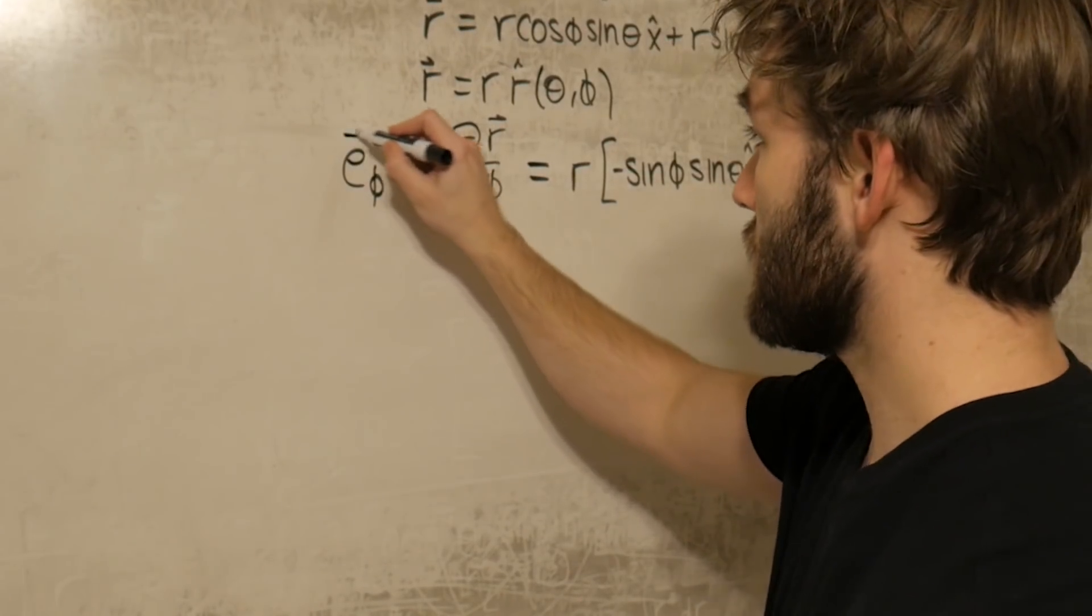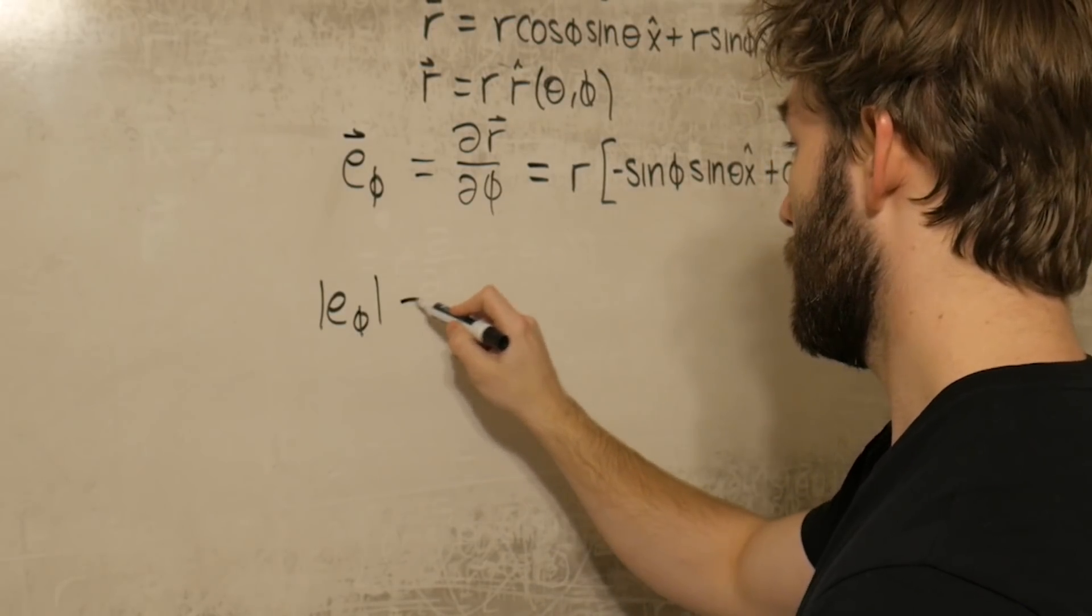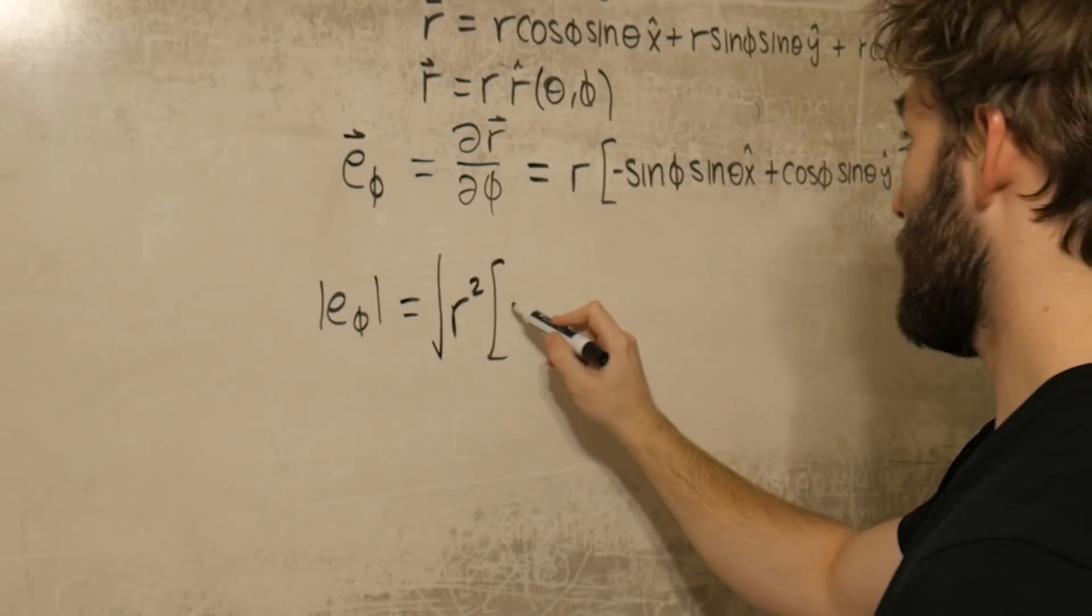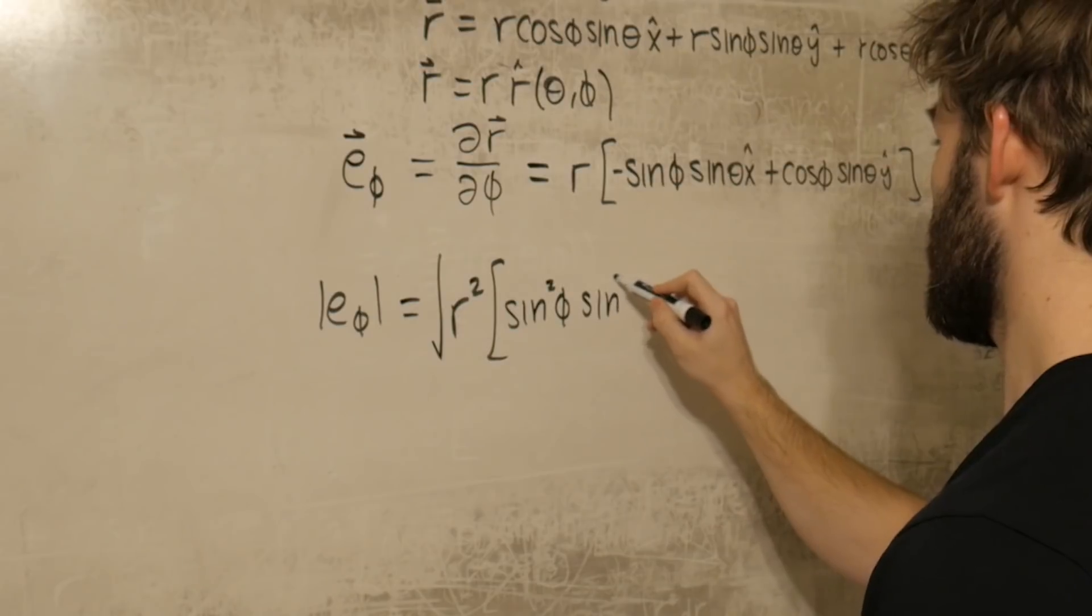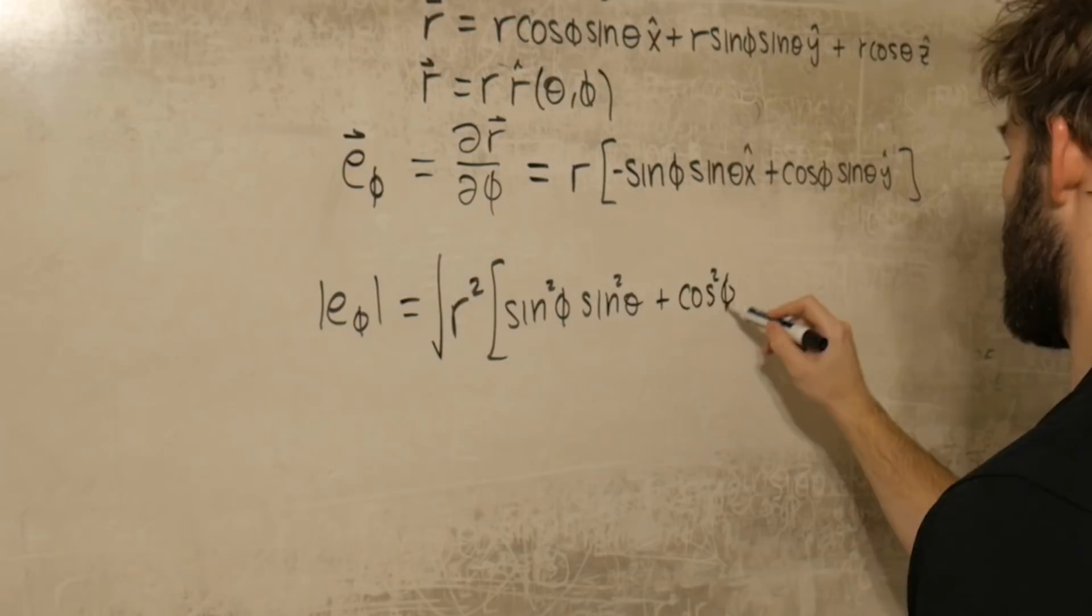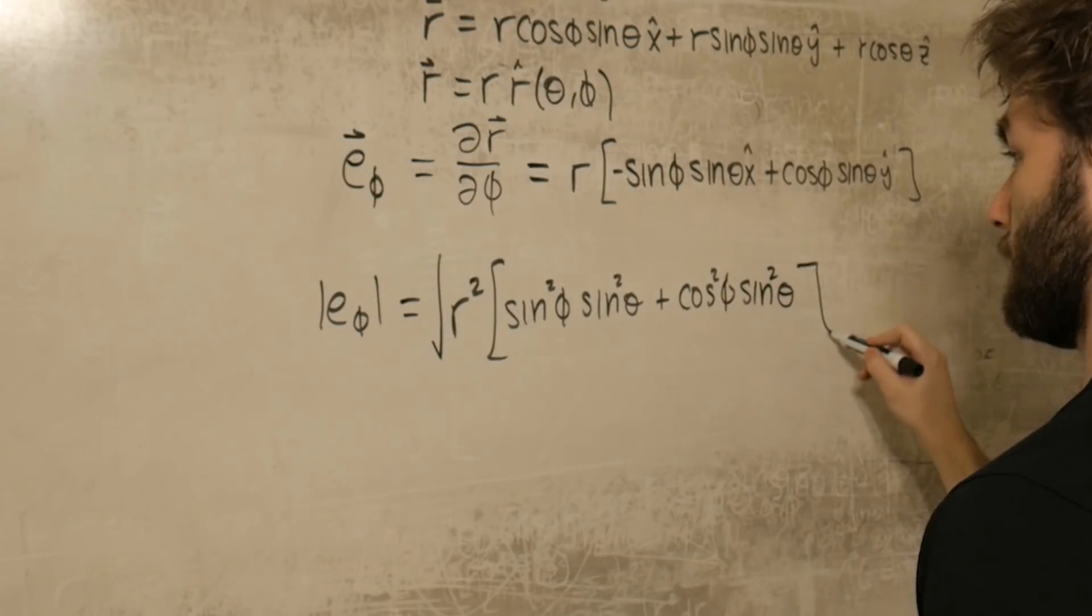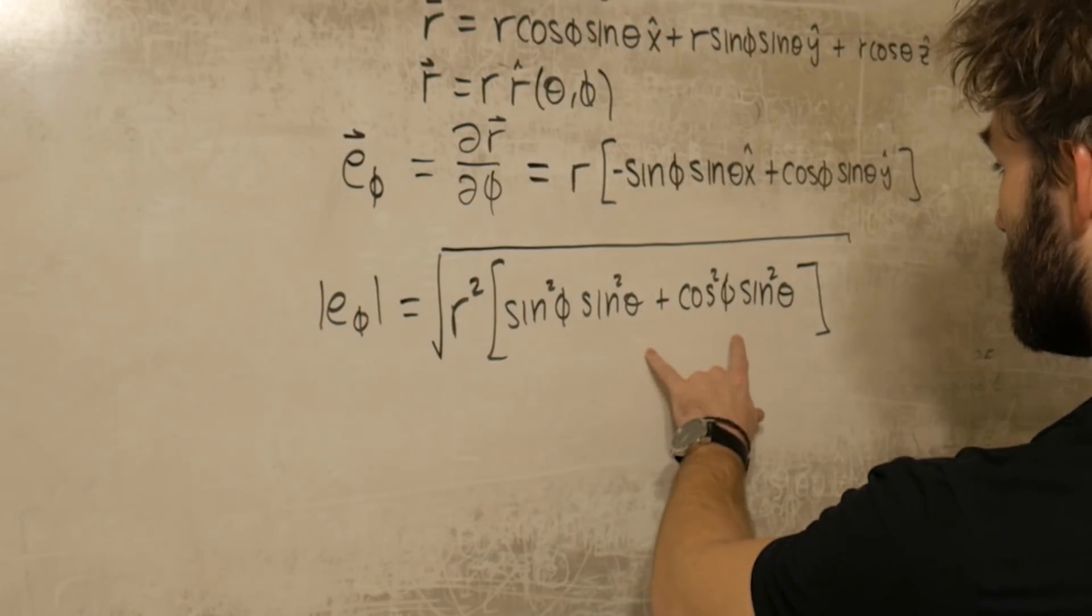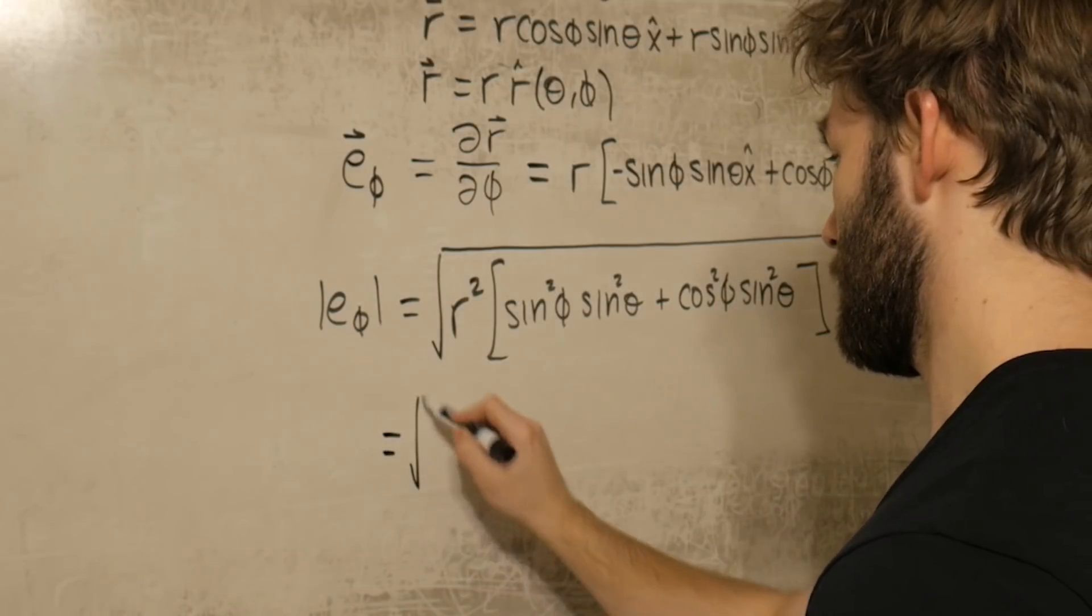And the next step that we have to do is just to turn this into a unit vector. So we can find the magnitude of e sub phi is equal to the square root of r squared. We've got a sine squared phi sine squared theta plus cosine squared phi sine squared theta. What we can do is we can factor out a sine squared theta.